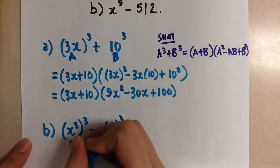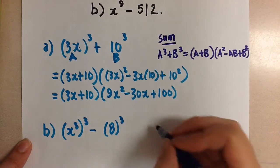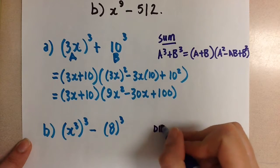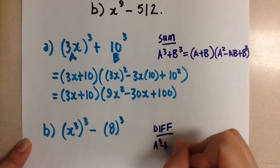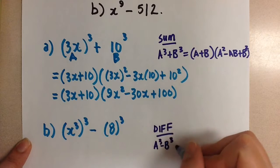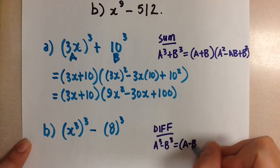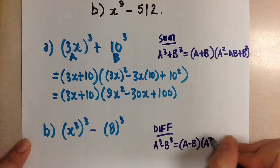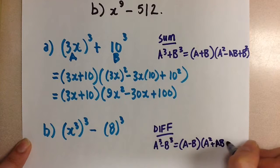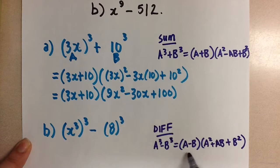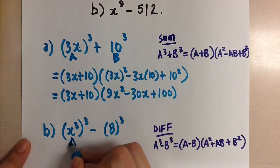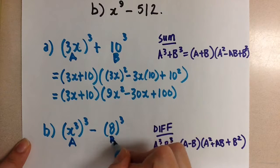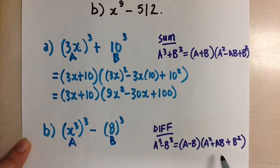So now, the formula for a difference of cubes says that if we have a cubed minus b cubed, it's going to be equal to a minus b times a squared plus ab plus b squared. So we'll use this formula with the base x cubed for your a and 8 for your b, and we'll be able to get the factored form.